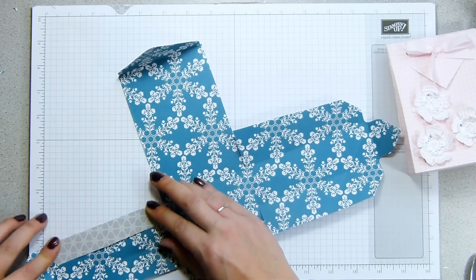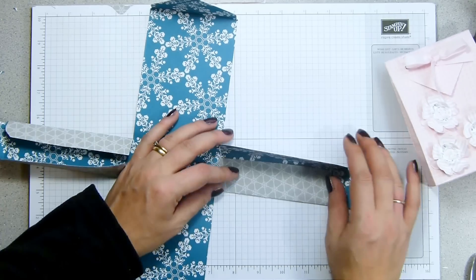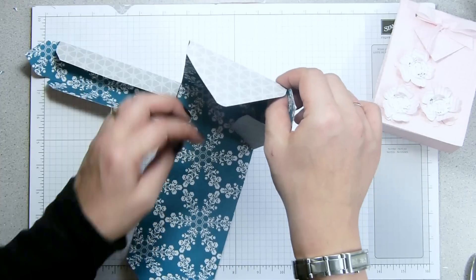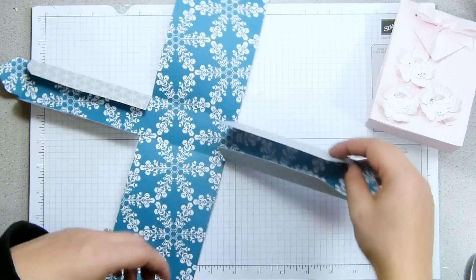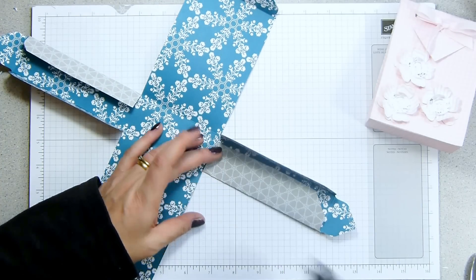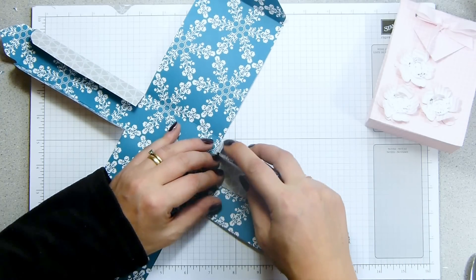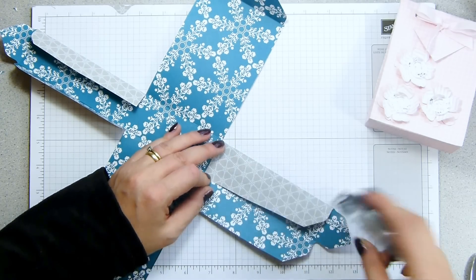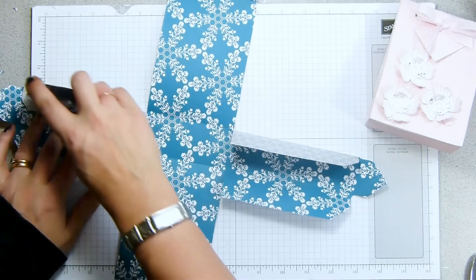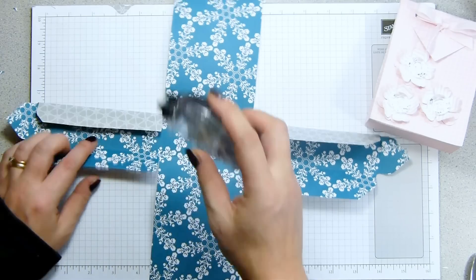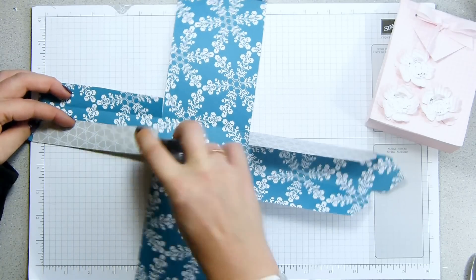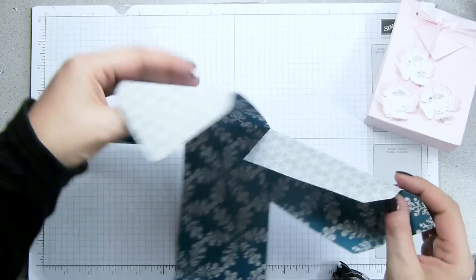Now we're going to start putting glue on. So these sections that we've folded over, these are going to stick in that fashion. I want to put adhesive on all of these. I'm just going to use snail for speed. You could use sticky strip. I wouldn't use Tombo. It's too wet for paper and it would buckle or bend or warp the paper.